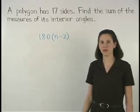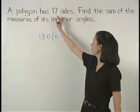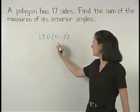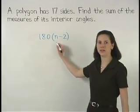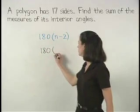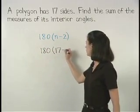So here, since our polygon has 17 sides, we can plug a 17 in for the n in our formula. And we have 180 times 17 minus 2.